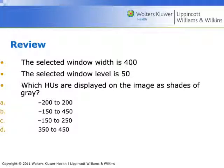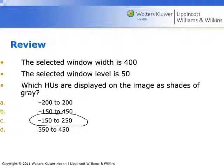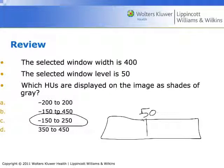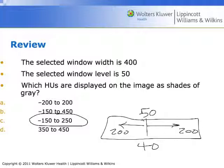Here's a question: the selected window width is 400 and the selected level is 50. Which Hounsfield units are displayed on the image as shades of gray? Negative 200 to 200? Negative 150 to 450? Negative 150 to 250? Or 350 to 450? The answer is negative 150 to 250. The centering point is at 50, and the total width is 400, so it ranges 200 in each direction from 50.